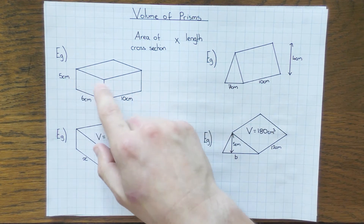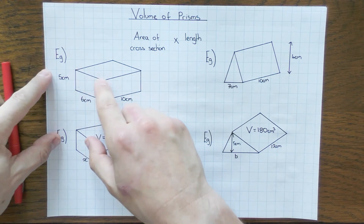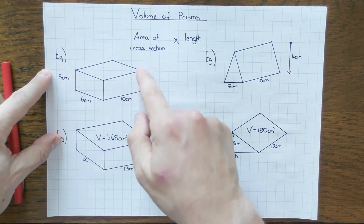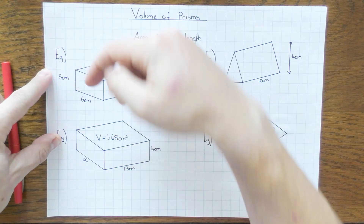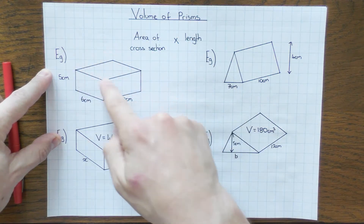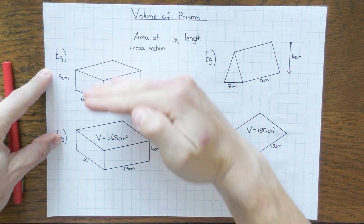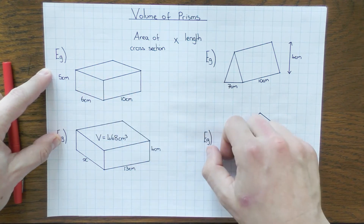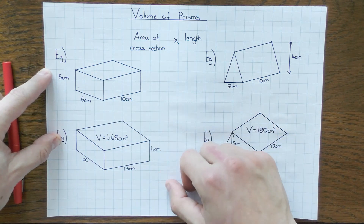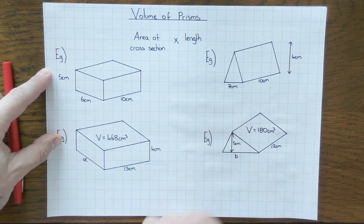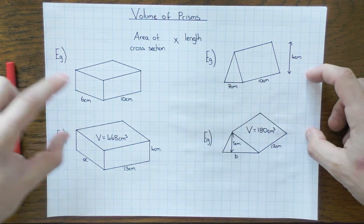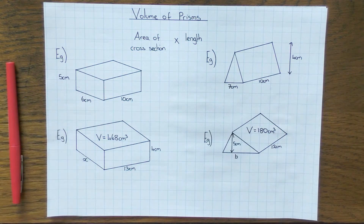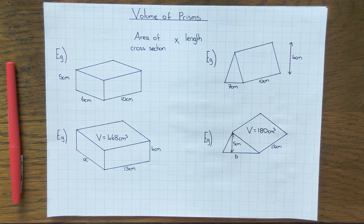Now with a cuboid, this rectangle goes through the whole shape, this rectangle going that way will go through the whole shape, and the top rectangle will also go through the whole shape — so this one actually has three cross sections. We'll have a look at cuboids, triangular prisms, trapezoidals, and cylinders. We're also going to look at how we go back to find lengths if we're given the volume of that particular shape.